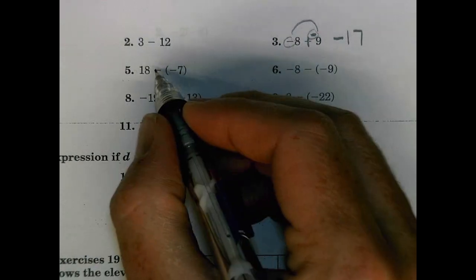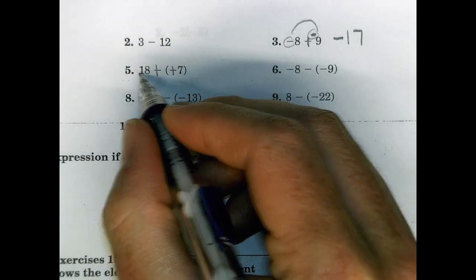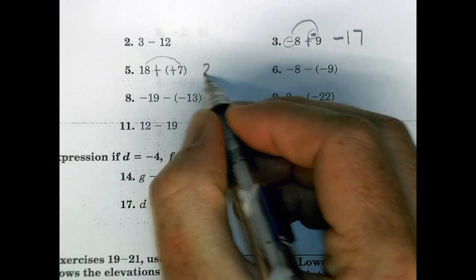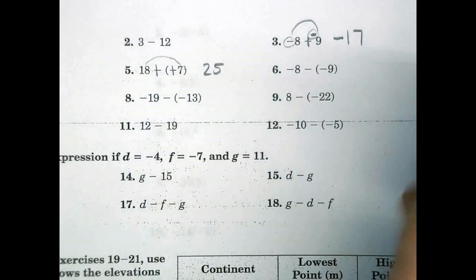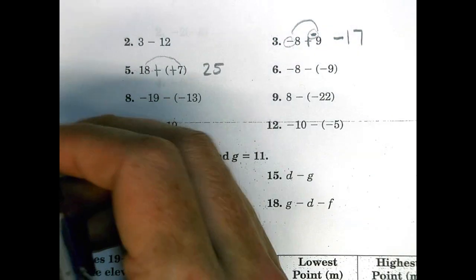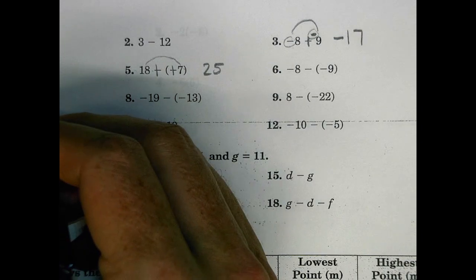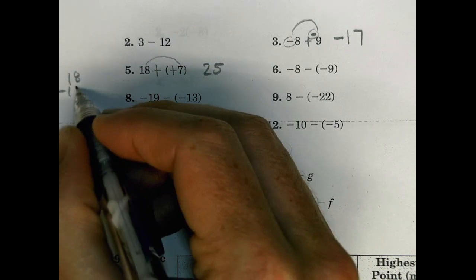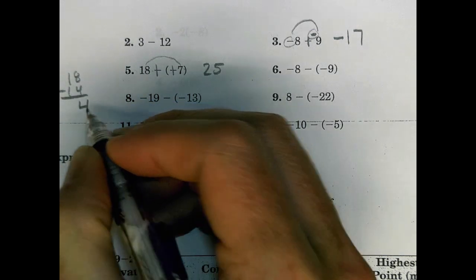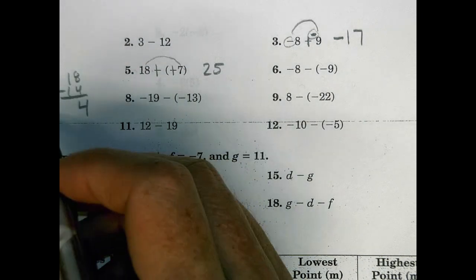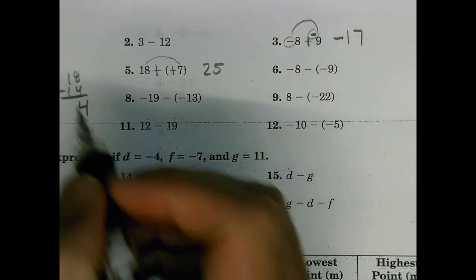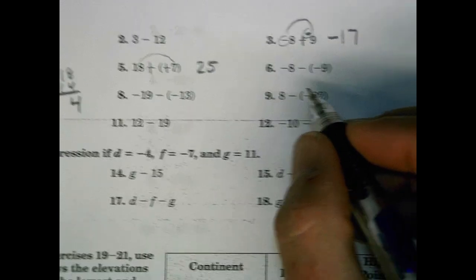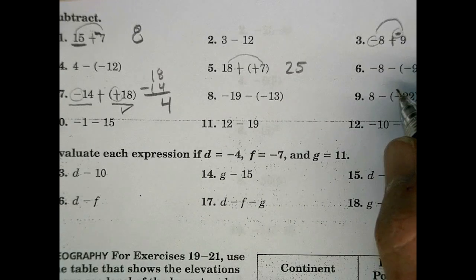Number 5: add the opposite. Signs are the same, so find the sum: 18 plus 7 is 25, keep the sign the same. Number 7: add the opposite, but now signs are different, so find the difference: 18 minus 14 is 4. The greater absolute value is positive 18, so the answer is positive 4.